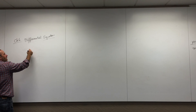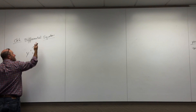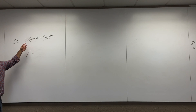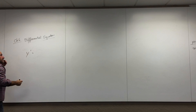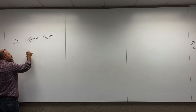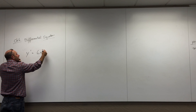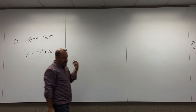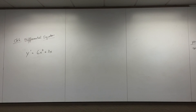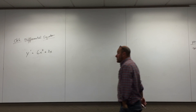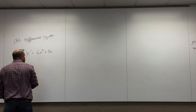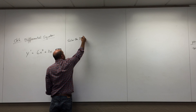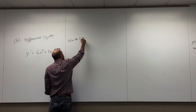A differential equation is an equation that has a derivative in it. Here's an example: y prime equals 6x squared plus 3x. This is an equation with a derivative in it. When we say we want to solve the DE - by the way, I'm going to abbreviate it as DE - solving the differential equation means this: find the function y.